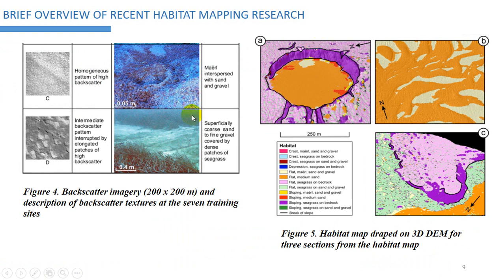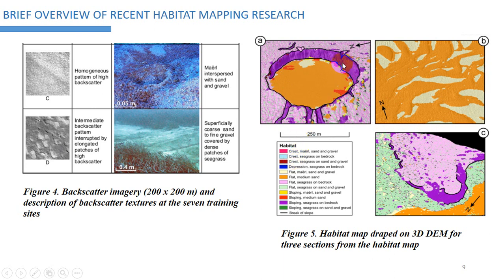You can see that images are collected using diving methods or the remotely operated vehicle to record video. They then make a comparison with the backscatter data from the multi-beam sonar, ensuring matching features for comparison. Finally, they produce a habitat map like this.